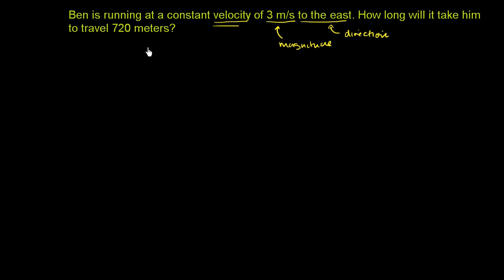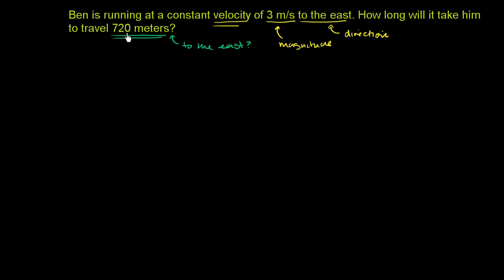How long will it take him to travel 720 meters? And maybe they should say 720 meters to the east, to make it clear that it is a vector quantity — so that it's displacement as opposed to just distance. But we'll do it both ways.